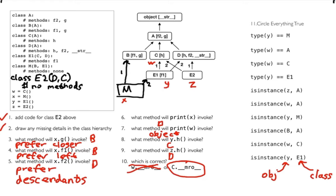Let's go through some examples. What is the type of Y, and is it equal to M? The type of Y is E1, so this is False — E1 is not equal to M. Next: the type of W is C. Is C equal to A? No, it's a different class, so that's False too.